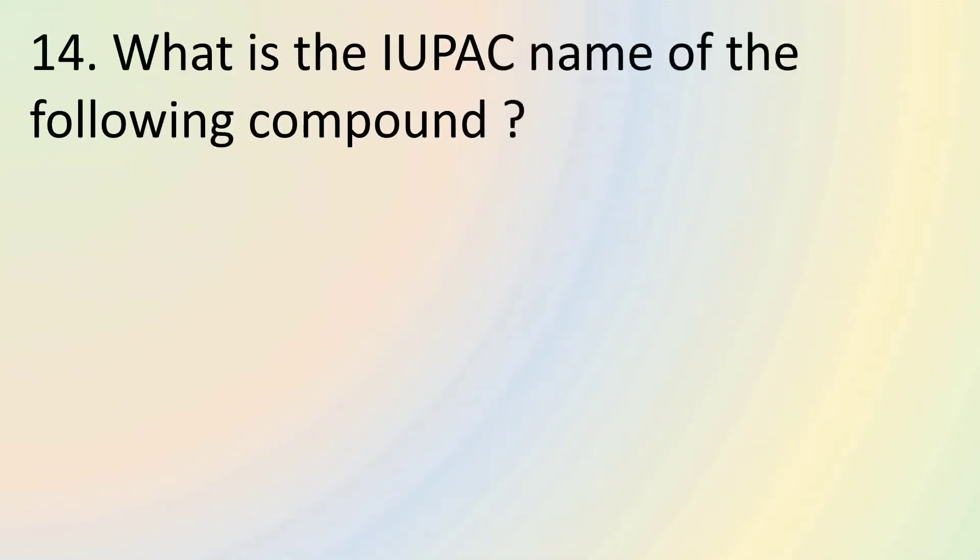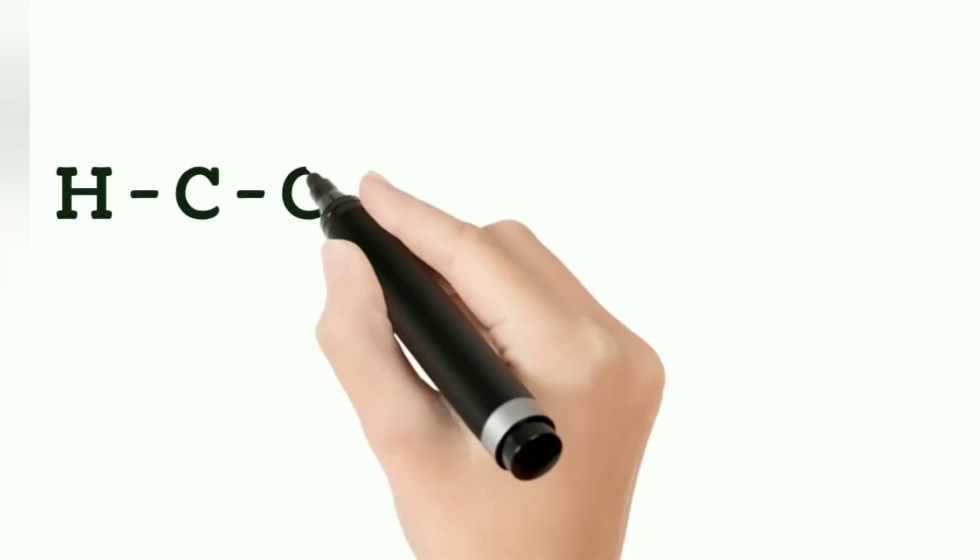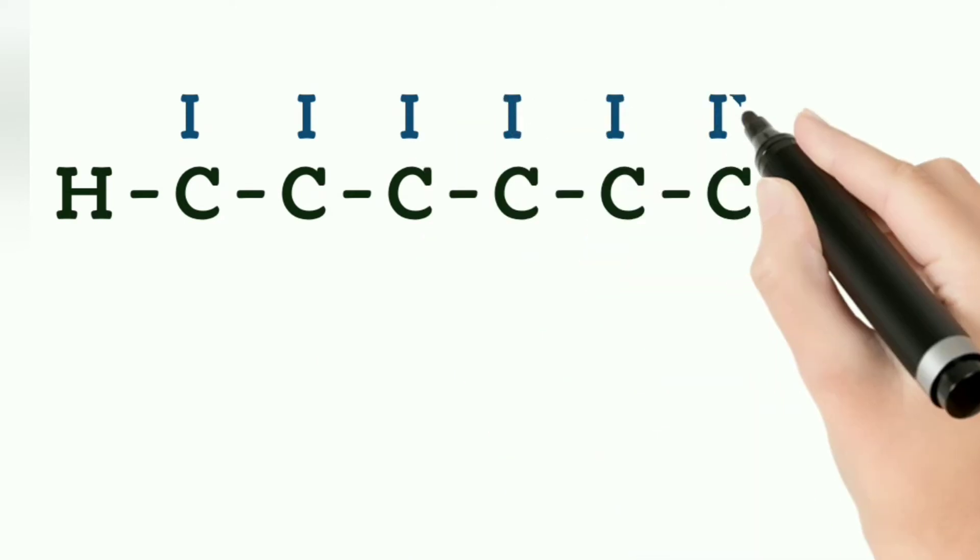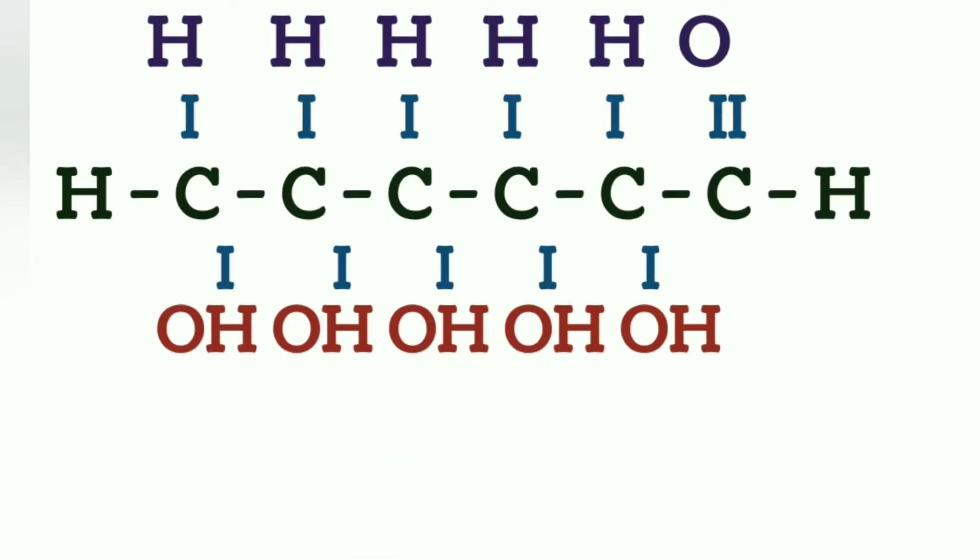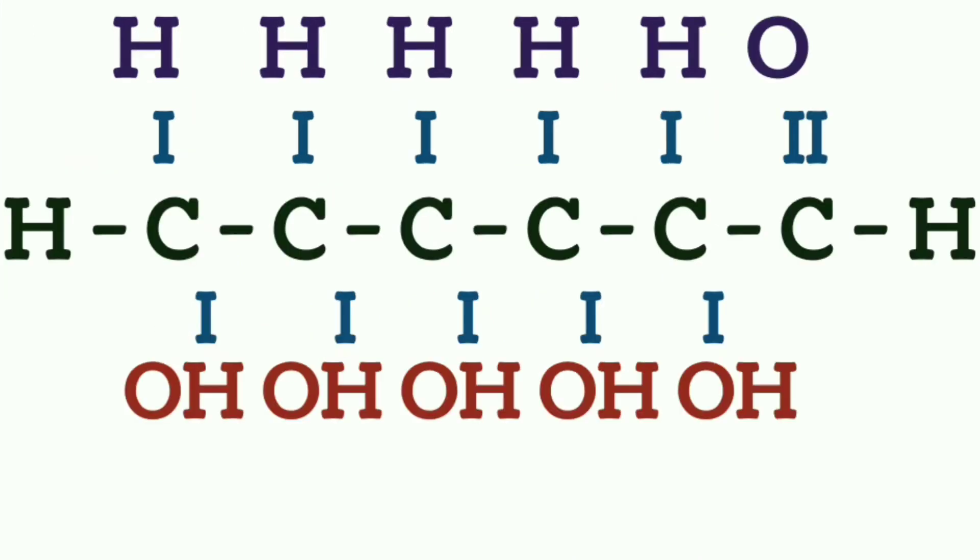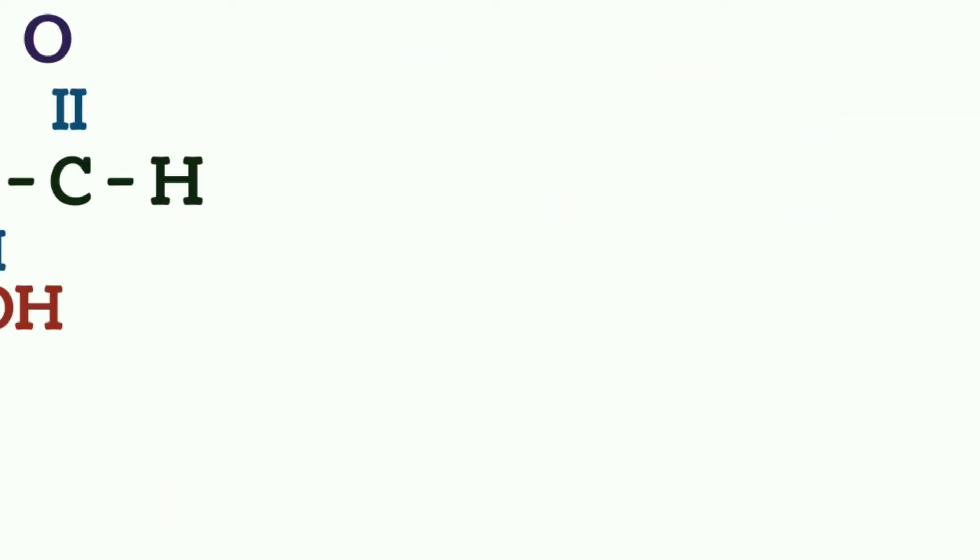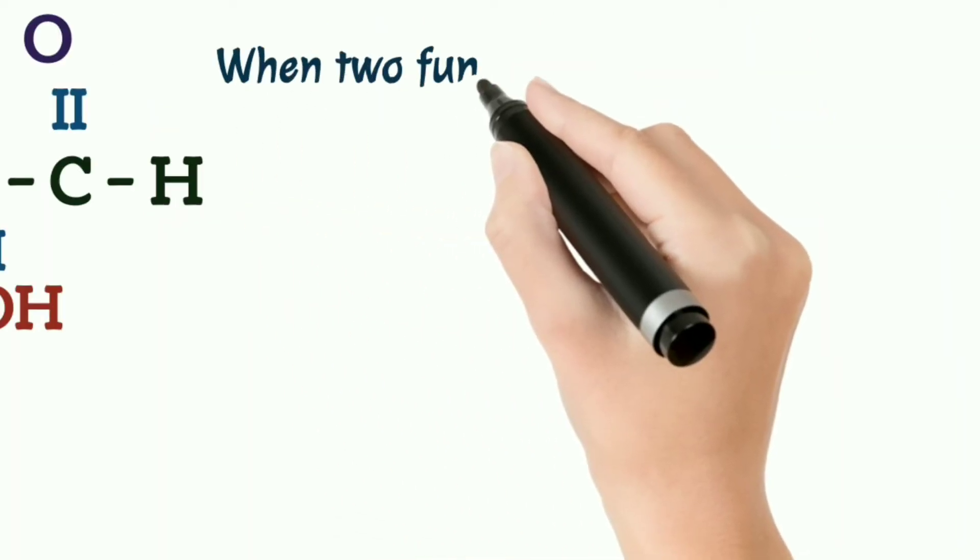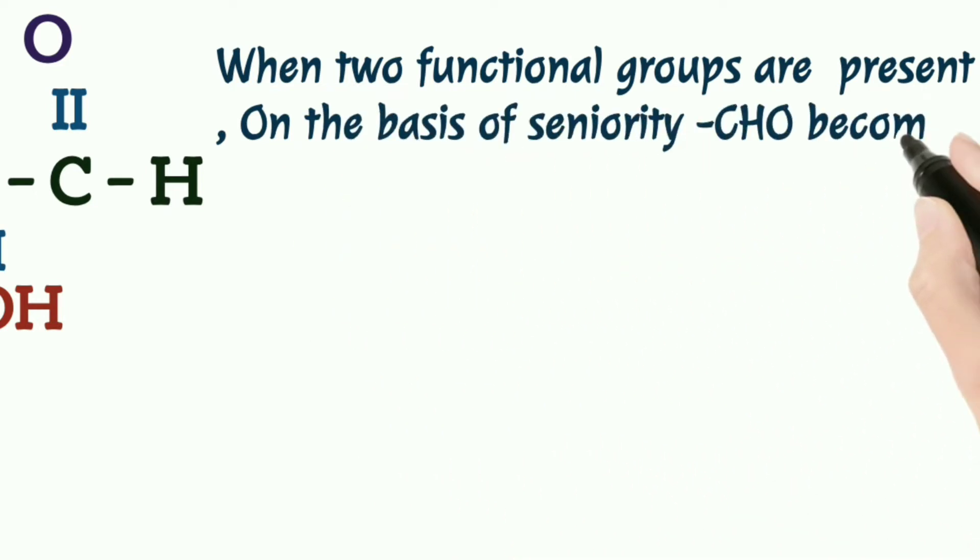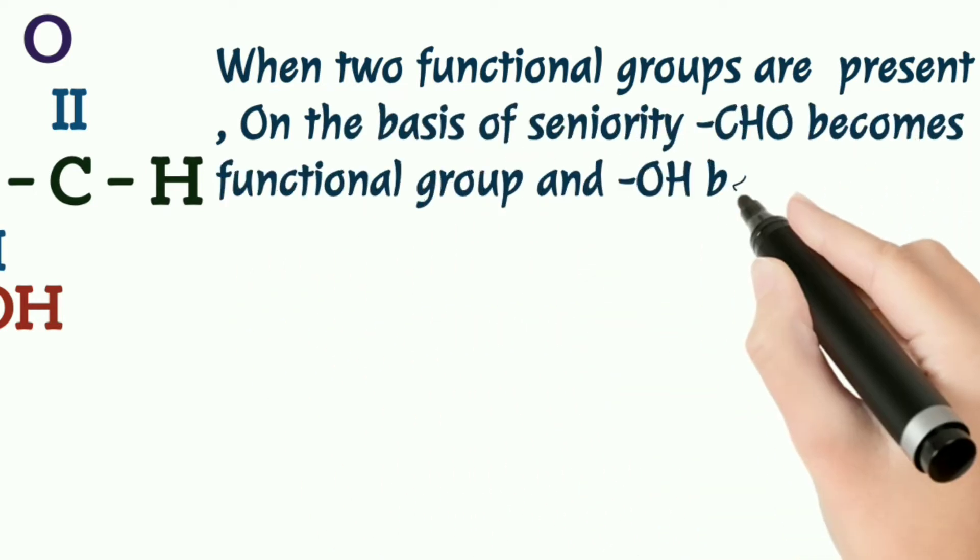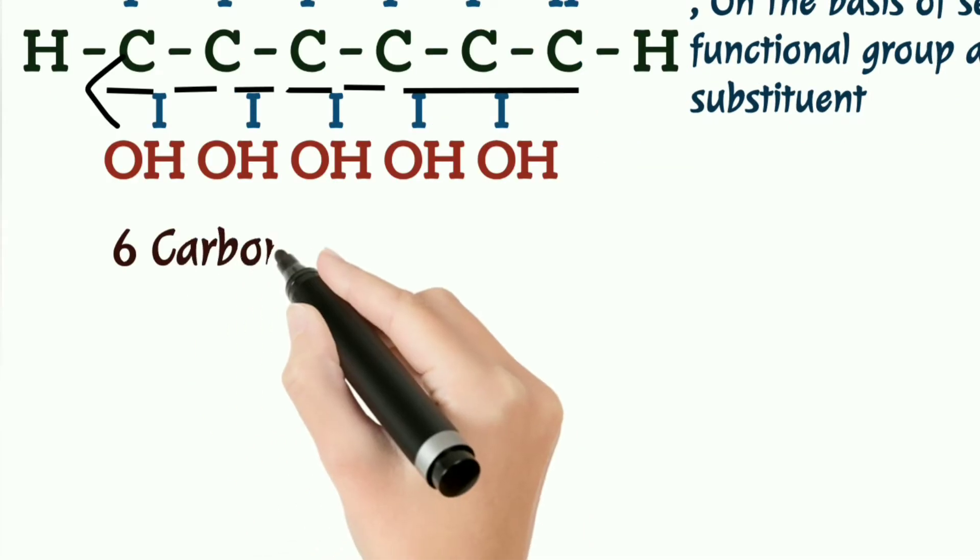Question number 14 asks us to identify the IUPAC name of the given compound. Let's learn naming an organic compound. Let's draw the structural formula. The first step in naming an organic compound is to identify the longest continuous carbon chain, which is this here. Second step is to follow lowest sum rule. There are two functional groups, CHO and OH. So when two functional groups are present, according to the decreasing order of their seniority, the CHO becomes functional group and OH becomes substituent.